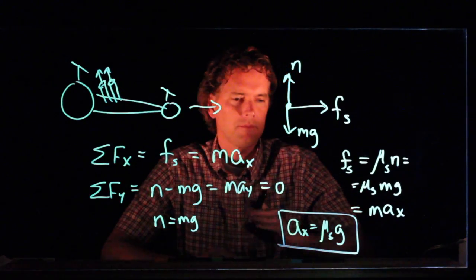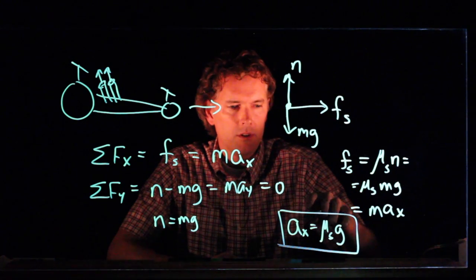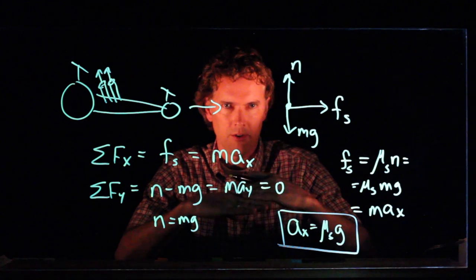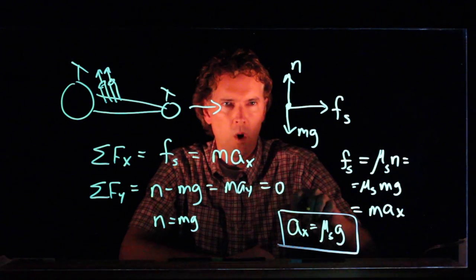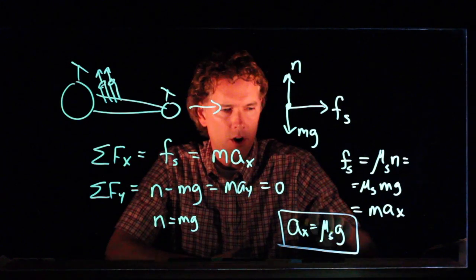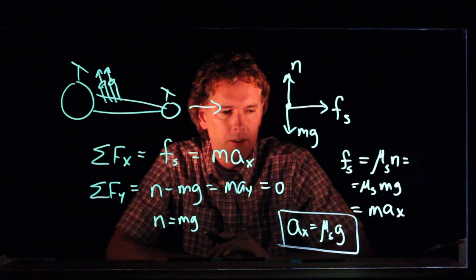So you can accelerate your car as a function of that static frictional coefficient. Now, for rubber on concrete, mu s is about 1.0, which means that the fastest that you could accelerate your car is 1g, which is pretty fast, right? 9.8 meters per second squared.